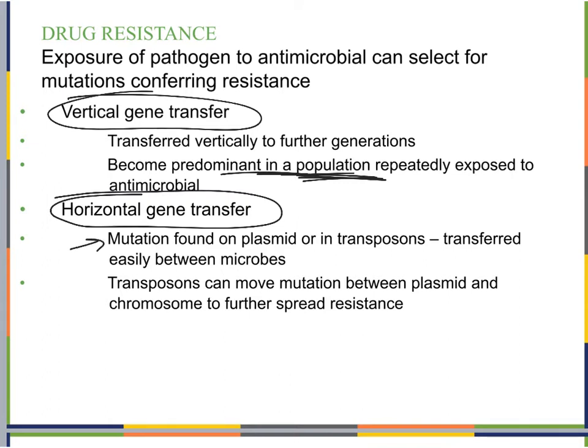A resistance mutation can be found on a plasmid, which can give resistance, or in transposons, and then be transferred between different organisms. Transposons can move the mutation between the plasmid and the chromosome, so that when that particular bacteria goes through vertical gene transfer, it's transferring that resistance to every generation.